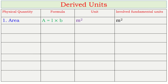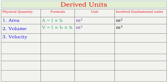Next: volume. Volume = length × breadth × height. This consists of three meters — length in meter, breadth in meter, and height in meter. When meter multiplies three times, it forms meter cubed. That's why the fundamental units involved are meter three times, i.e., m³.